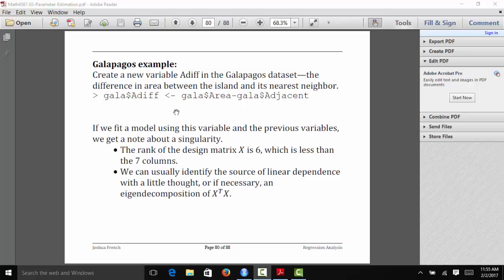Let's look at an example of this unidentifiability problem. For our Galapagos dataset, we are going to create a new variable, adif. Adif is just the difference between area and adjacent. So it's very clear here that adif is a linear combination of the other two columns. When we fit this model, we should have a problem with unidentifiability because our X matrix does not have full rank. The X matrix will have seven columns, but it will only have column rank six.